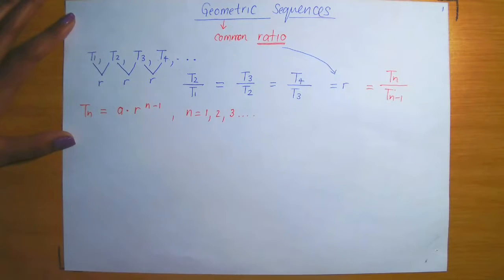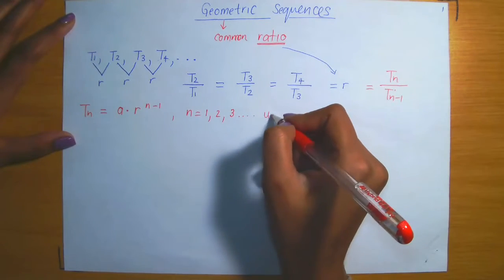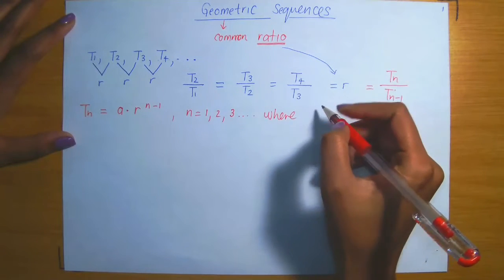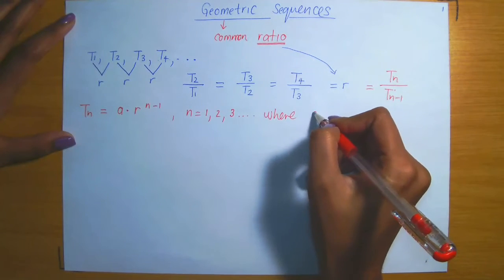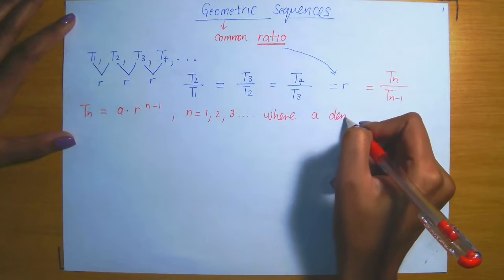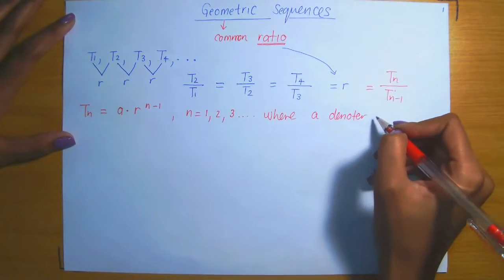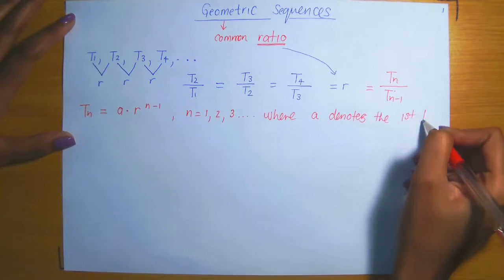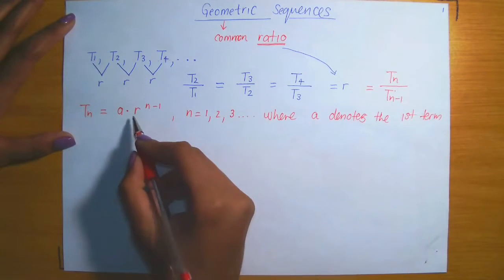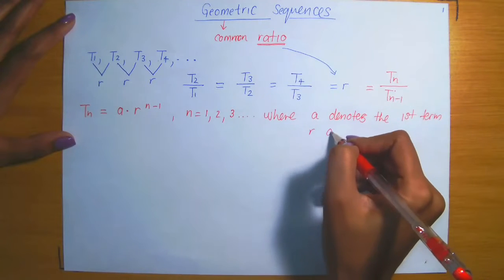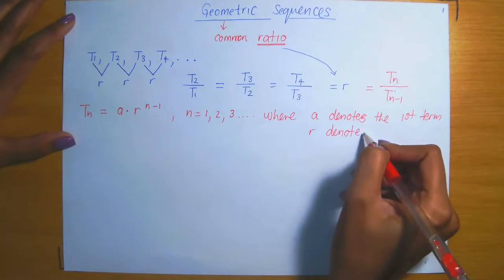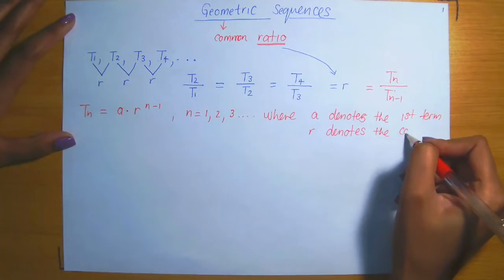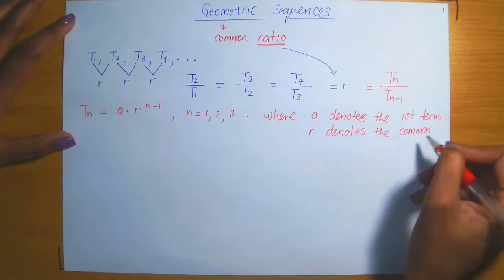So what do each of these terms in this formula represent? As before in the case of arithmetic sequences, a refers to the first term in the sequence. So a denotes the first term, and r denotes, as defined above, the common ratio.